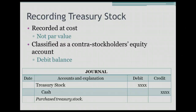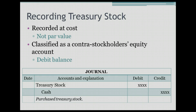Now let's look at the accounting treatment of treasury stock. When we purchase treasury stock, we record it at cost — whatever we paid to acquire the shares, not at par value like when we originally issued them. We debit treasury stock for the price paid and credit cash. Treasury stock is a contra stockholders' equity account, which means it has a normal debit balance.